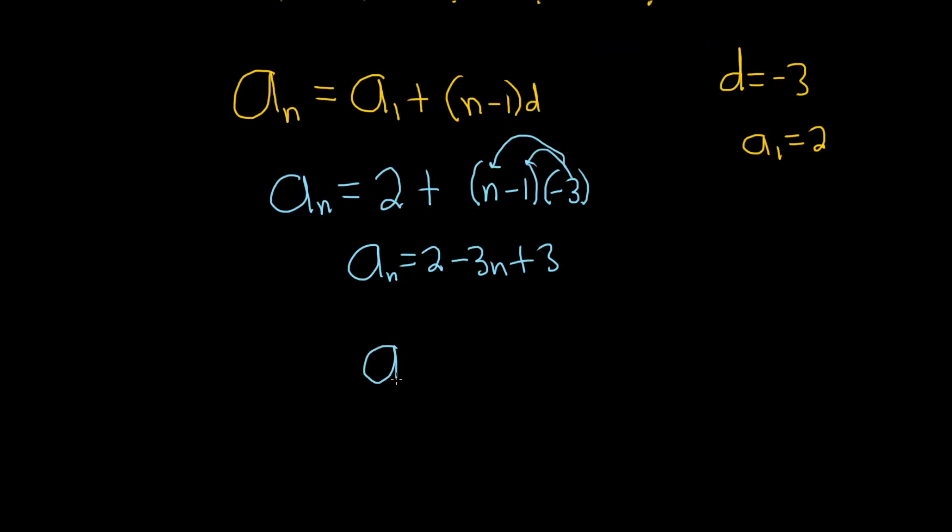So a sub n would be equal to 2 plus 3, which is 5. And then we have our minus 3n.